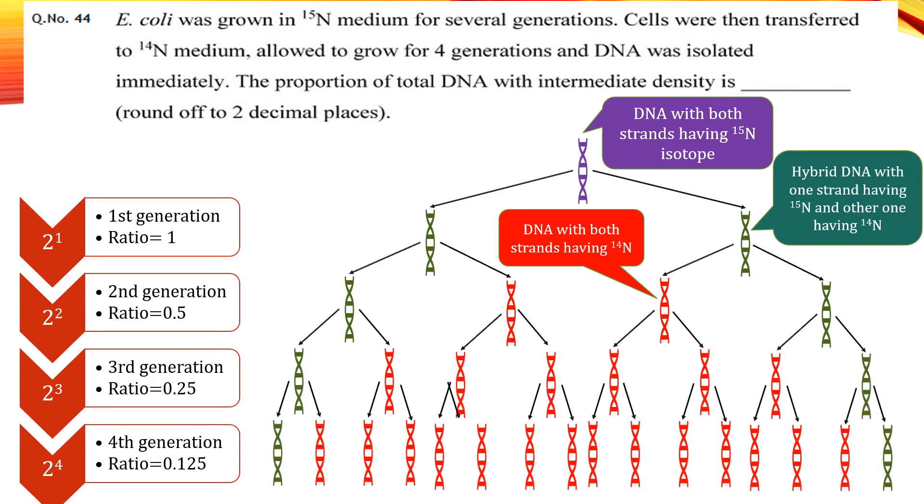With this, you can see on the left that the ratio of intermediate or hybrid DNA with the total number of DNA molecules in that generation is decreasing with generations, which is also evident from the diagram as there are only 2 hybrid DNA out of 16 DNA molecules in the 4th generation.